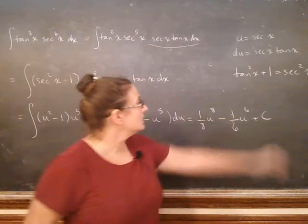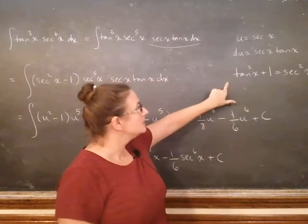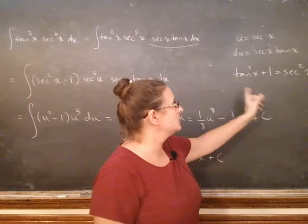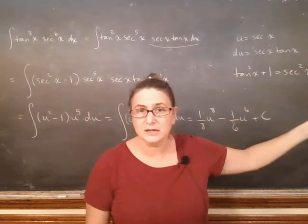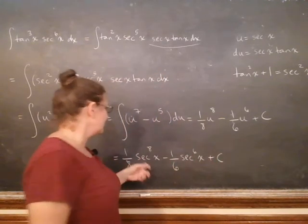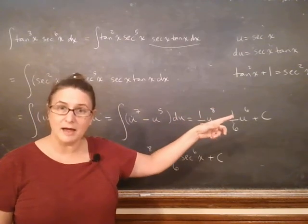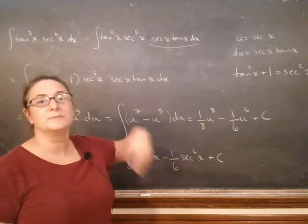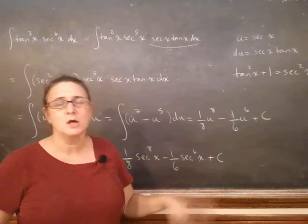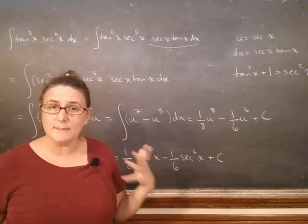However, because essentially what you're doing is you're using this identity. So we can change from tangents to secants using this identity. But if I want to change from secant to the 8th power into tangent to the 8th power, I'm going to have to be taking this whole thing to the 4th power. It's just going to be pretty ugly.